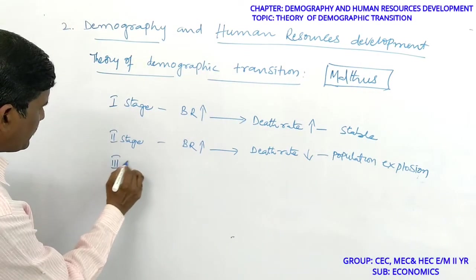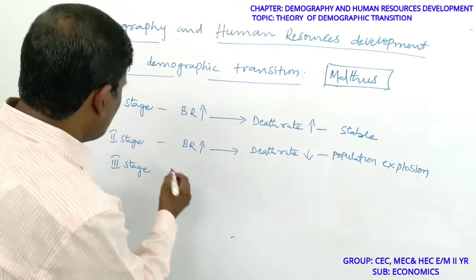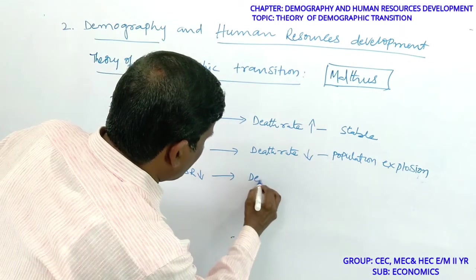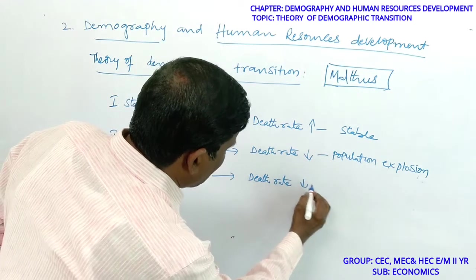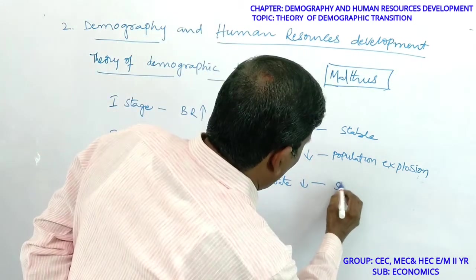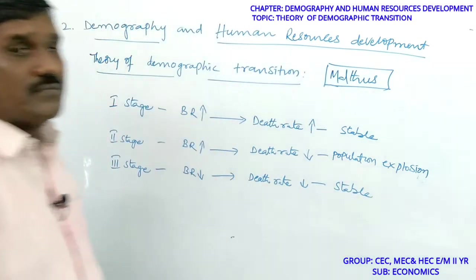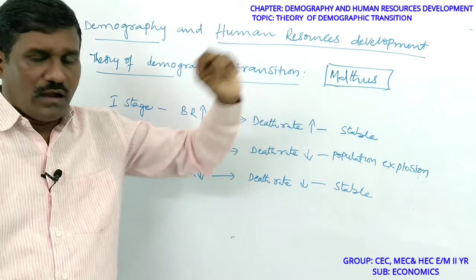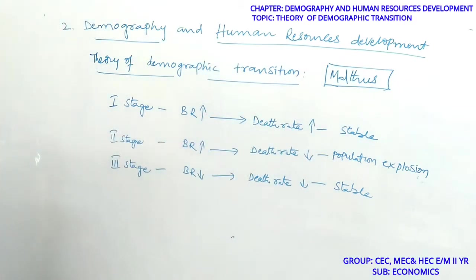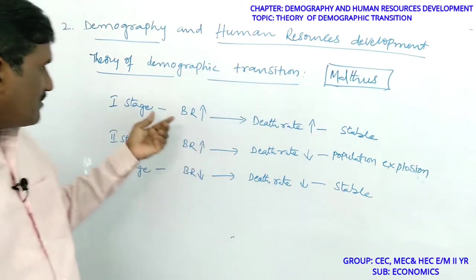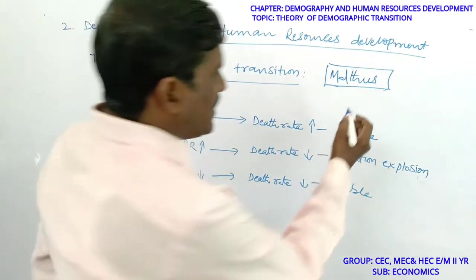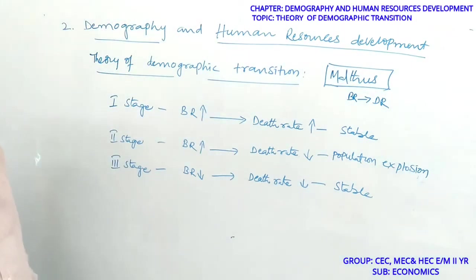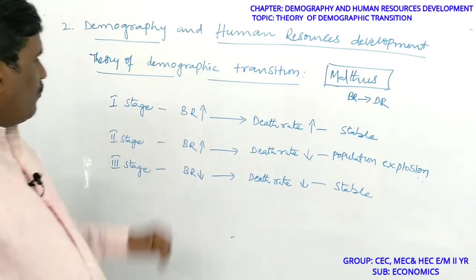In the third stage, birth rate is low and death rate is also low, so there is a possibility of stable population. The Theory of Demographic Transition is measured in terms of birth rate and death rate. According to census data, we can analyze the position and situation of a country.